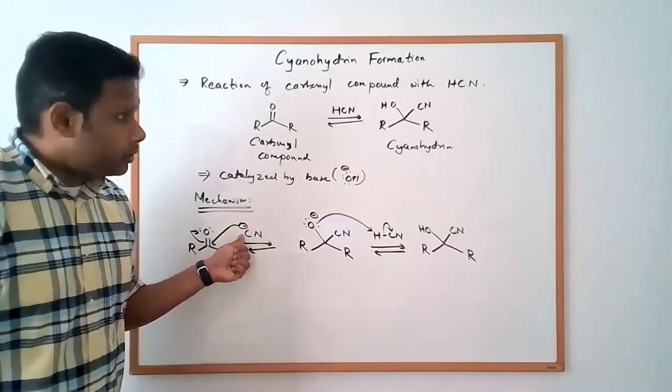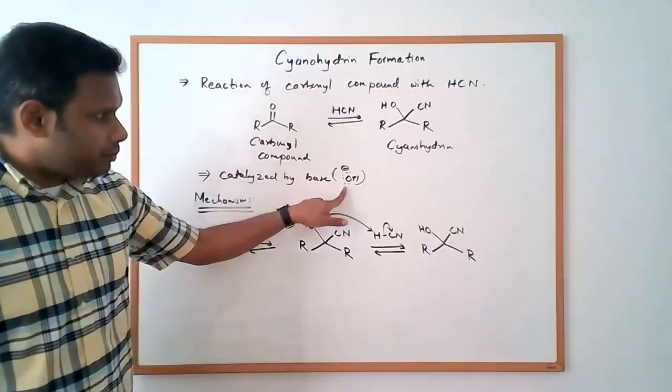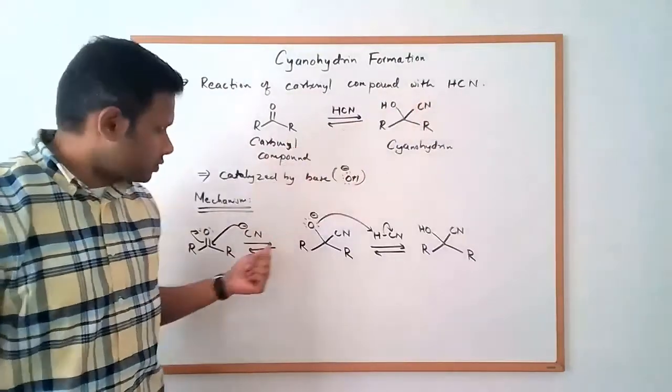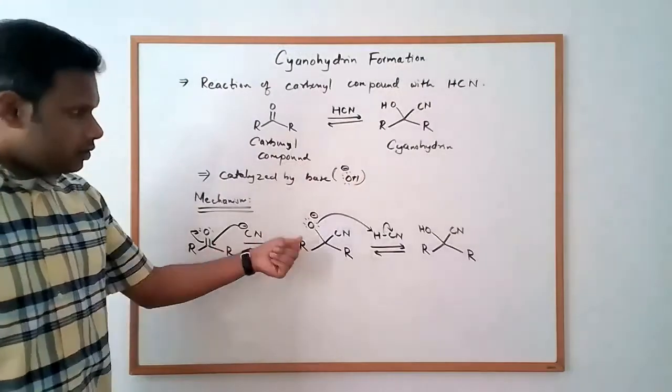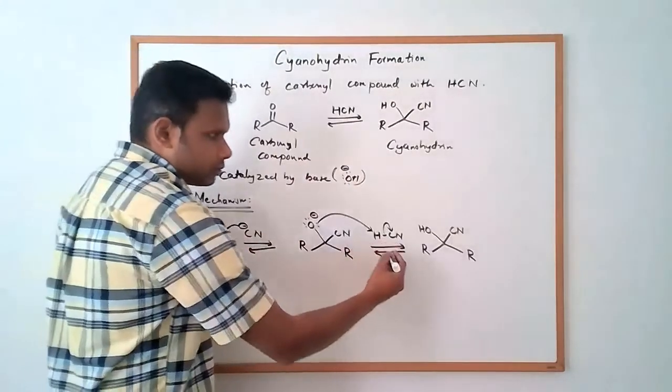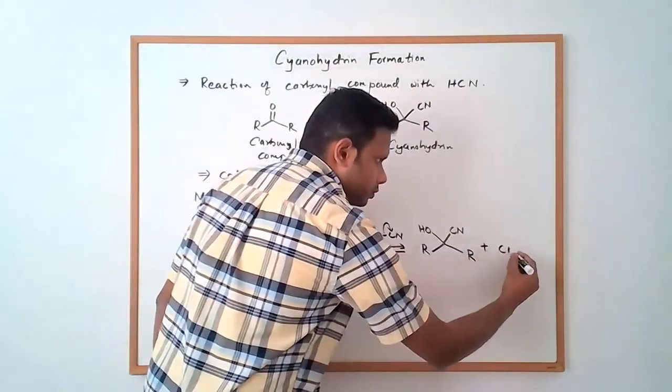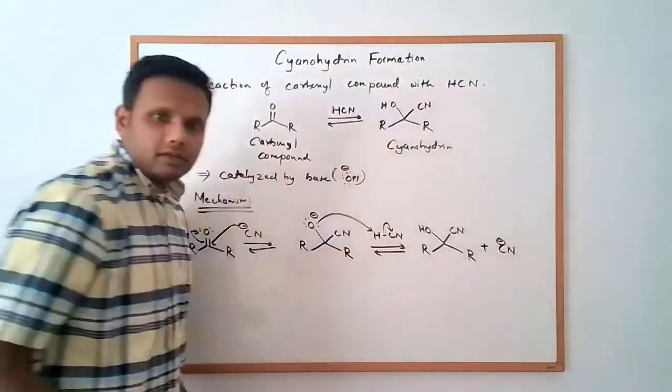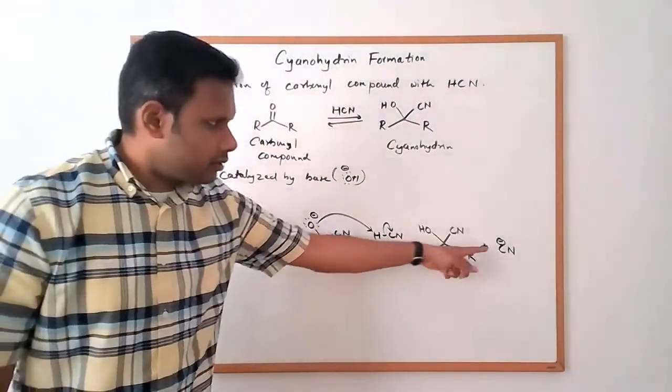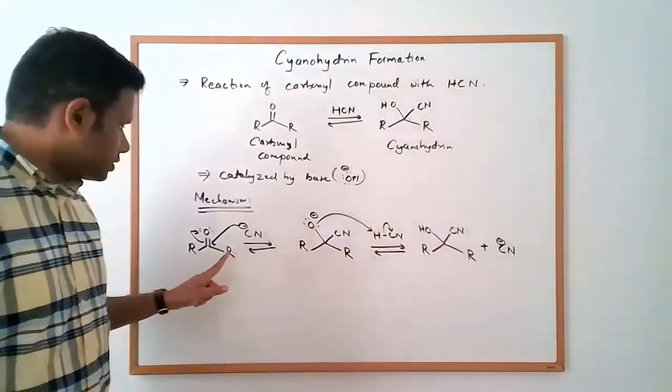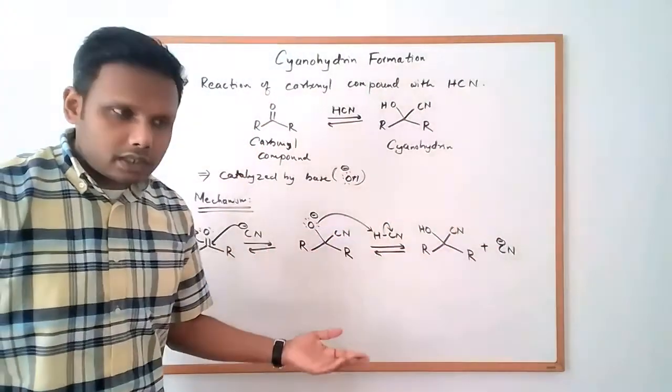And this cyanide would be generated by the catalytic base. So when the base reacts with HCN, that's going to generate some cyanide for you, a little bit of cyanide. And then notice how this attack here is going to regenerate cyanide for you. So that's why you only need a catalytic amount of base, because in the second step, cyanide is regenerated, which can go and start this reaction again.